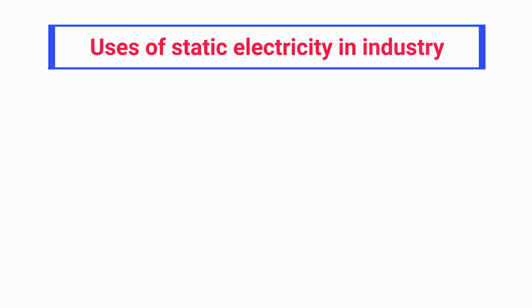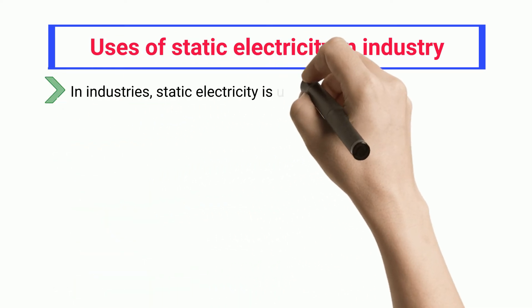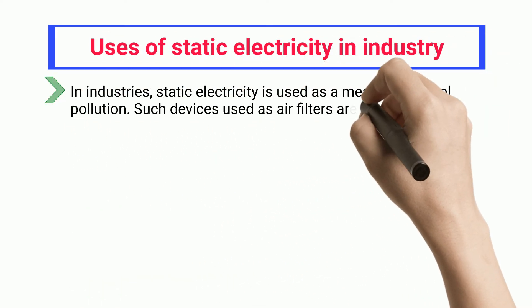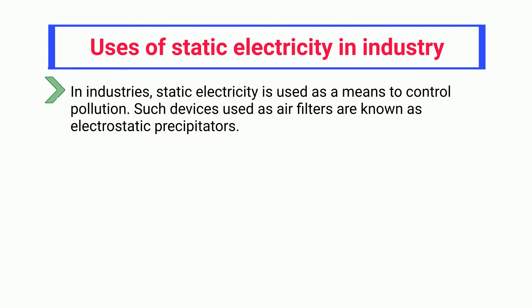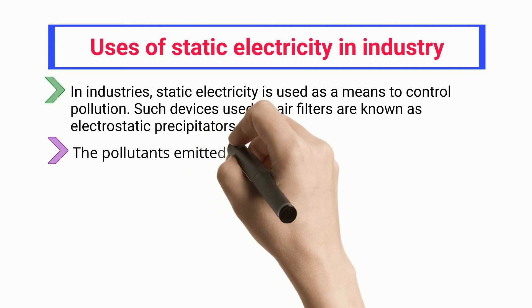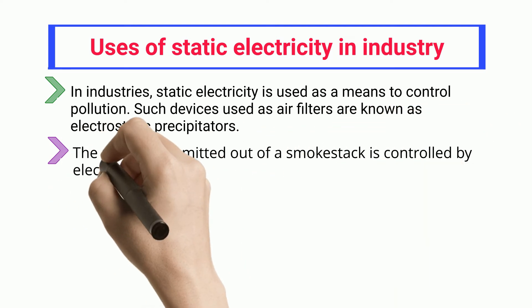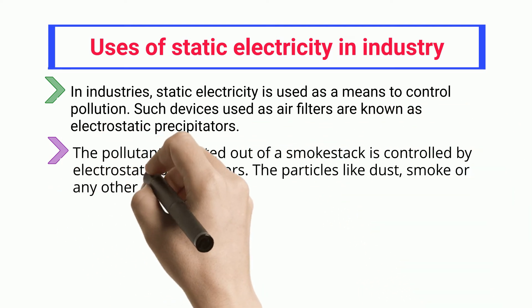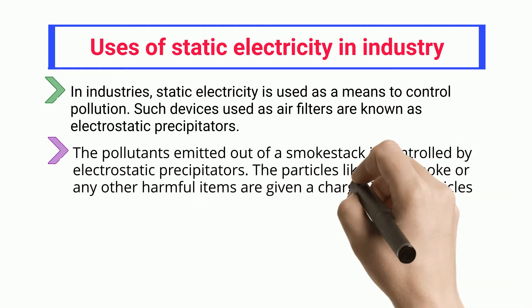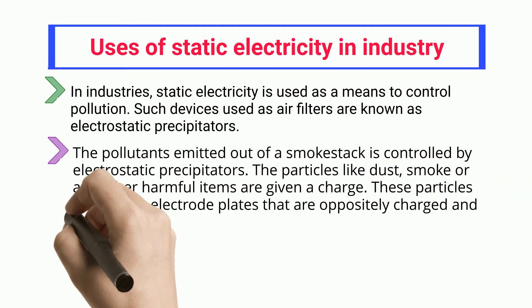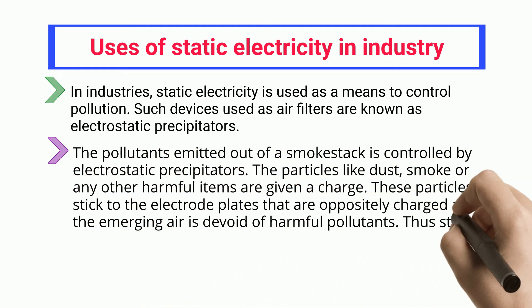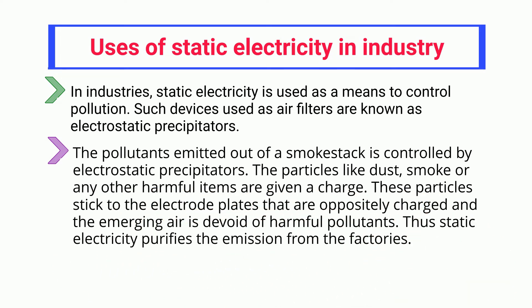In industries, static electricity is used as a means to control pollution. Such devices used as air filters are known as electrostatic precipitators. The pollutants emitted from a smokestack are controlled by electrostatic precipitators. Particles like dust, smoke, or other harmful items are given a charge, stick to oppositely charged electrode plates, and the emerging air is devoid of harmful pollutants, thus purifying factory emissions.